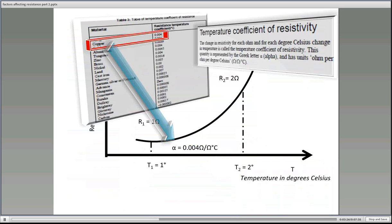So we're going to look at some information here, we're going to go through some questions. Now there's a thing called temperature coefficient of resistance, which says the change in resistivity for each ohm and for each degree Celsius change in temperature is called the temperature coefficient of resistivity. This quantity is represented by the Greek letter alpha and has the units ohm per ohm per degree Celsius. In this case here copper, 0.004 ohms per ohm per degree Celsius.